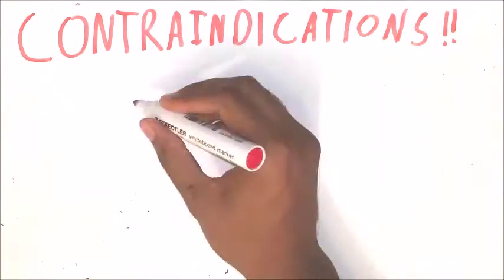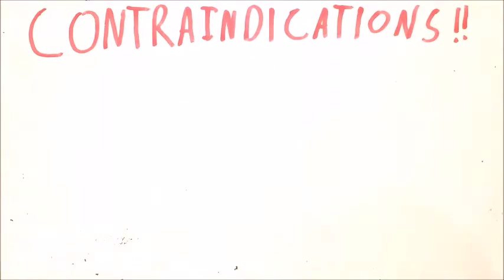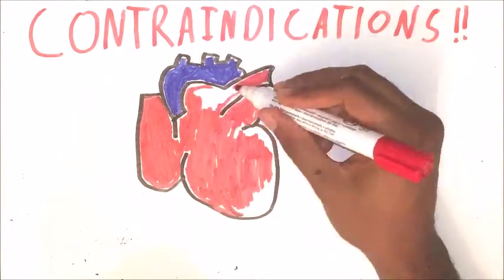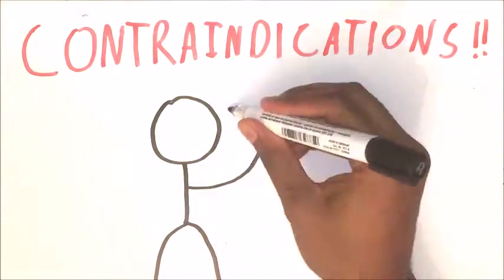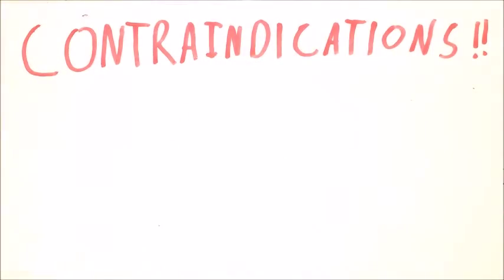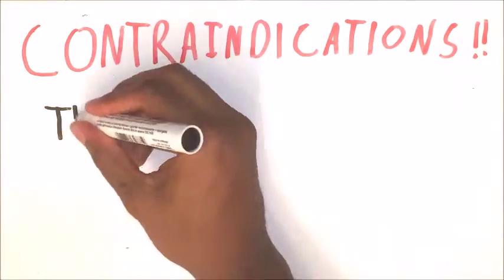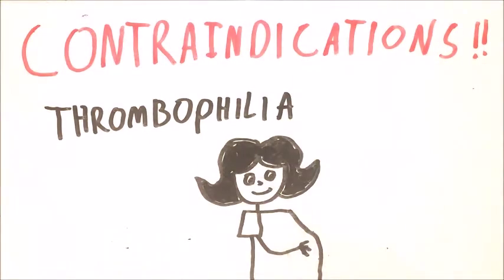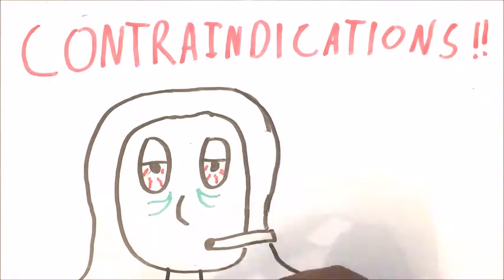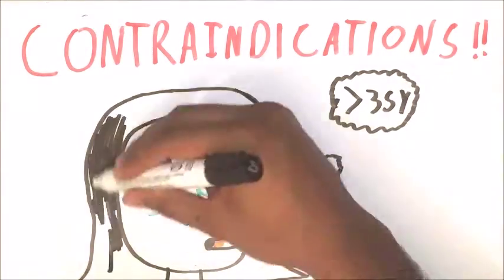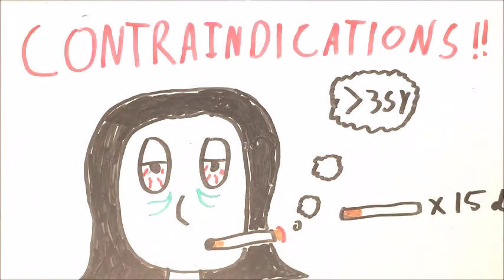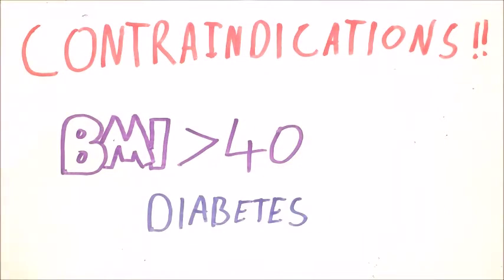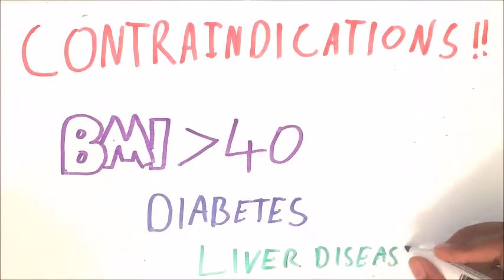These are a history of thromboembolism, a history of cardiovascular issues such as ischemic heart disease or hypertension, experiencing migraine with auras, having breast or endometrial cancer, blood disorders that increase the blood's tendency to clot such as thrombophilia, if the woman is pregnant, if a woman is 35 years old or above and she smokes or regardless of age if she smokes more than 15 cigarettes a day, if she has a body mass index greater than 40, or if she has diabetes with vascular complications or liver disease.